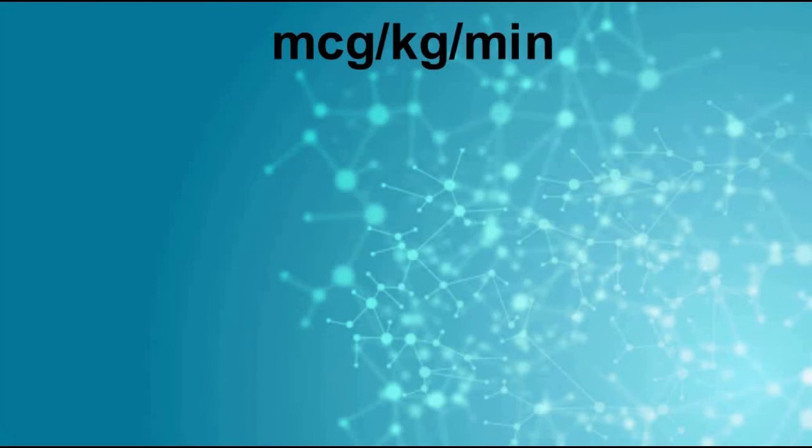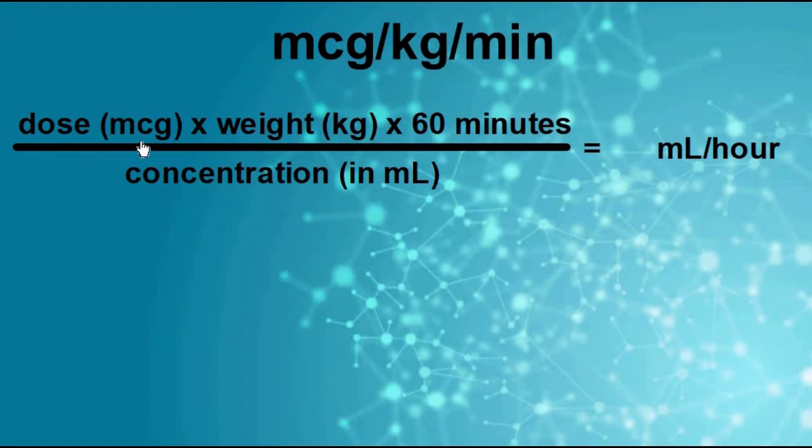Now the math for the weight-based dosing, which is micrograms per kilogram per minute, really isn't much harder. You're only adding one element. So the dose expressed in terms of micrograms times the weight of the patient in kilograms times 60 in order to convert to an hour divided by concentration. So the only new thing is multiplying by weight.